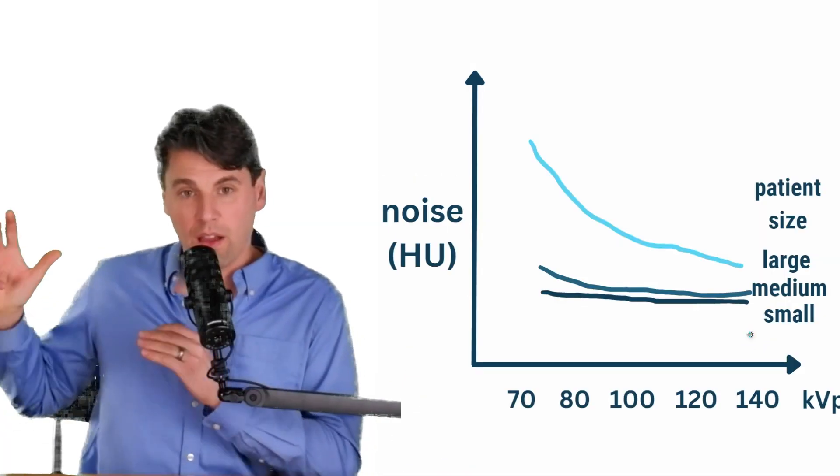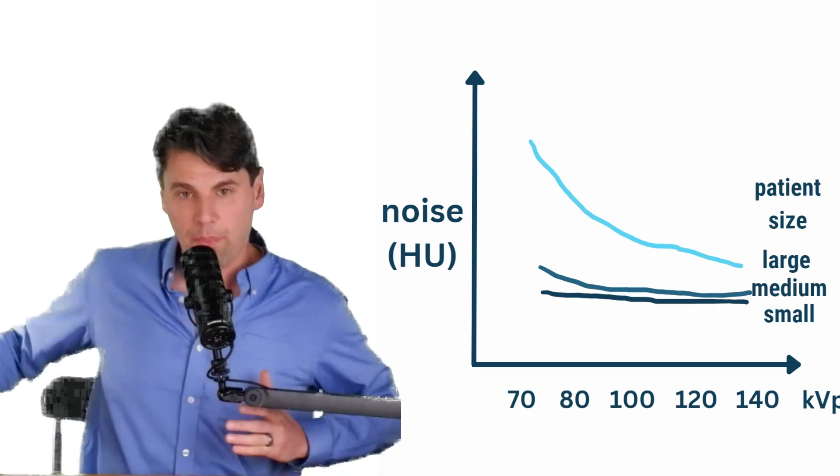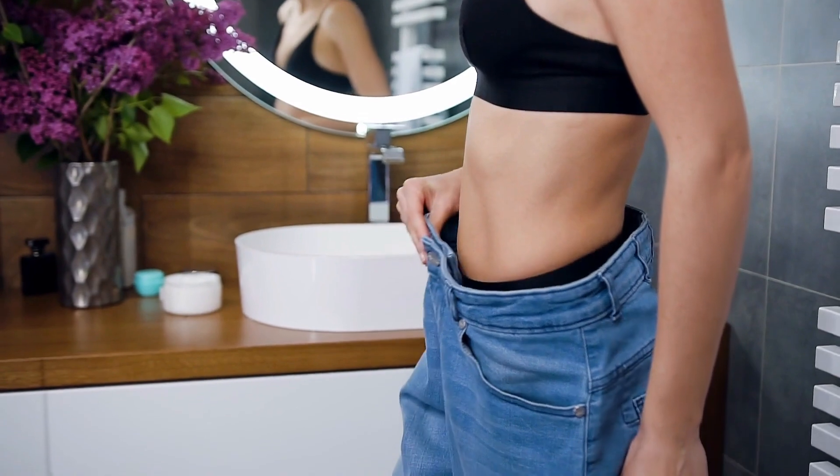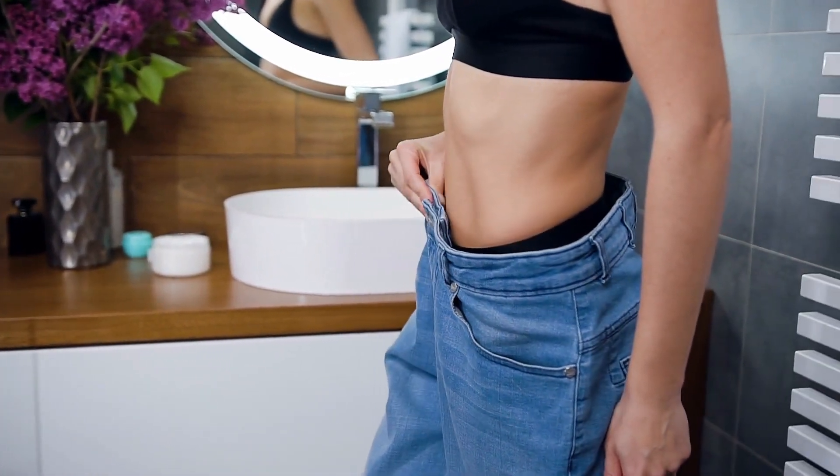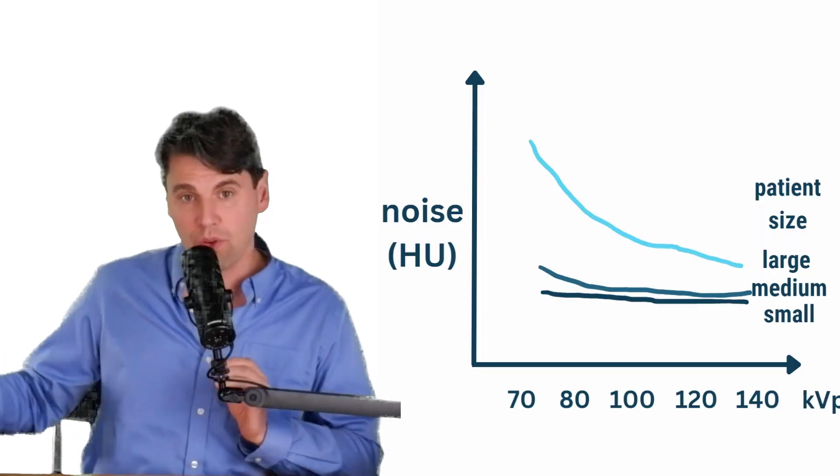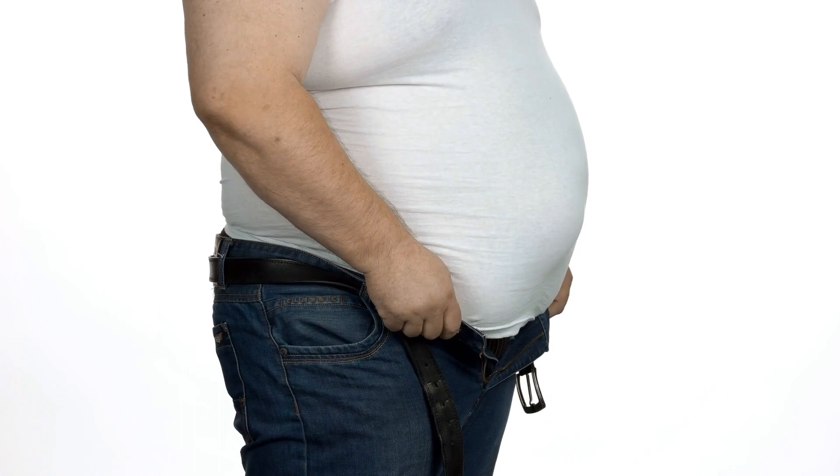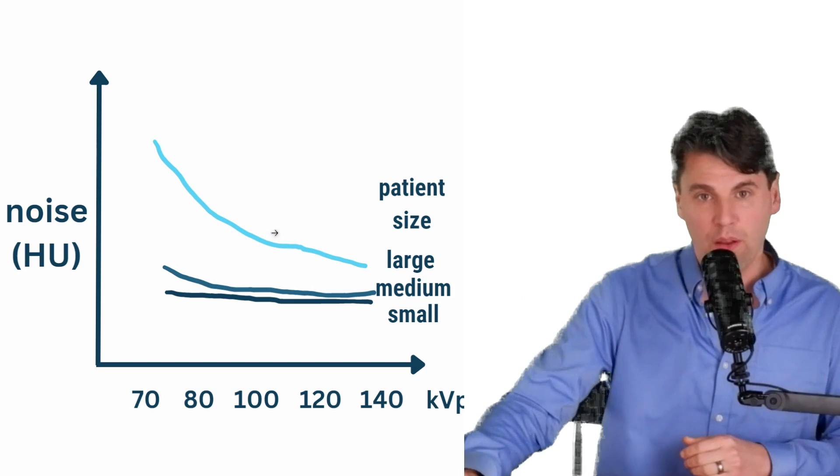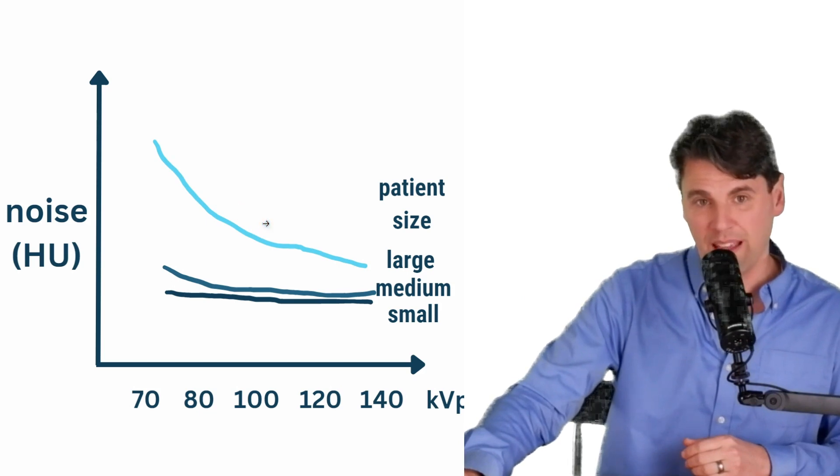We've also talked about the penetration of the beam being an important quality. So depending on how large your object is, for a relatively small object, you're actually going to be relatively stable in terms of the noise in your image. If you go to lower KVPs and give the same dose, if you have large objects, you're actually going to see a really steep increase where you get to that point where you're getting relatively fewer photons through the patient. And thus this is leading to a very noisy image.